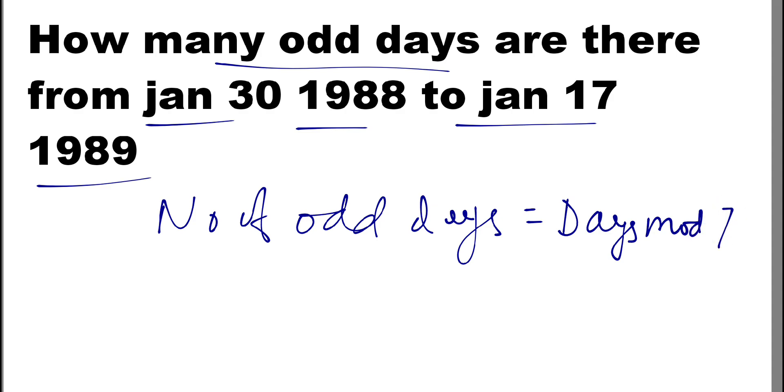Now we need to find the total number of days from January 30, 1988 to January 17, 1989. First of all, we need to find that is 1988 a leap year.